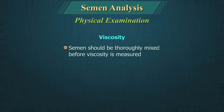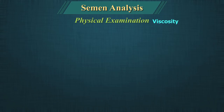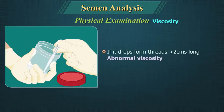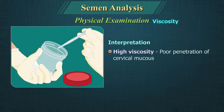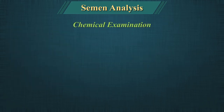Viscosity: The semen should be thoroughly mixed before viscosity is measured. It is assessed by dropping semen from a plastic disposable pipette. If it falls drop by drop, the viscosity is normal. Abnormal viscosity is when drops form threads more than 2 cm long. High viscosity may be associated with poor penetration of cervical mucus, while low viscosity may be associated with low counts.